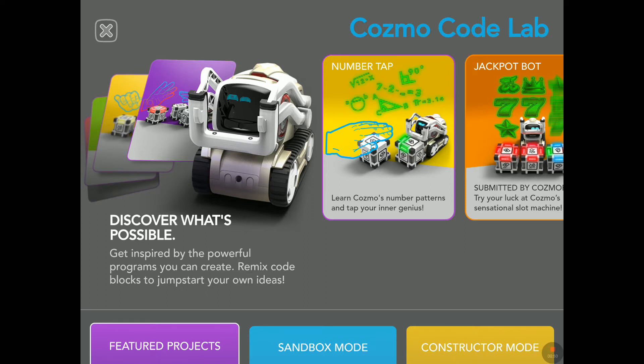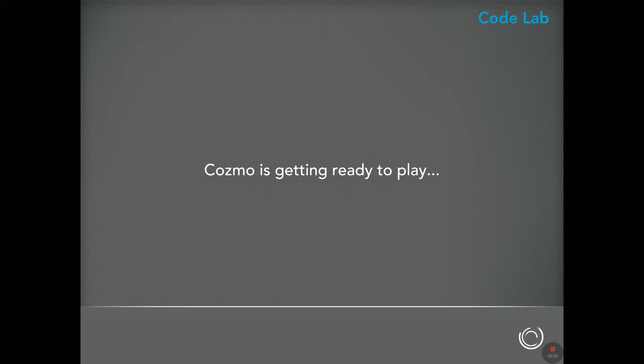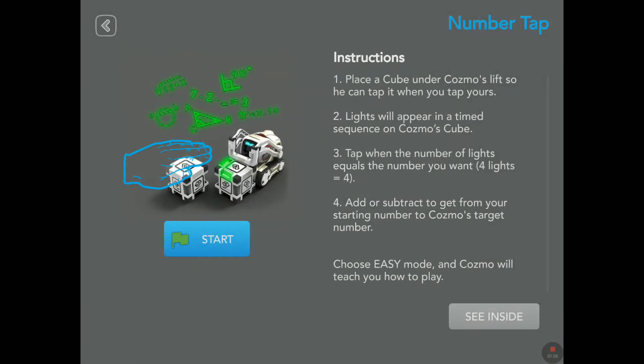So let's tap on this and see what this game is. Instructions: place the cube under Cosmo's lift so you can tap it when you tap yours. Lights will appear in a time sequence on Cosmo's cube. Tap when the number of lights equals the number you want. Add or subtract to get from your starting number to Cosmo's target number. Choose easy mode and Cosmo will teach you how to play.